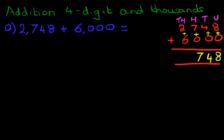And lastly, the thousands column. We've got 2 plus 6. So what is 2 plus 6? That's right. The answer is 8. And we have our answer.